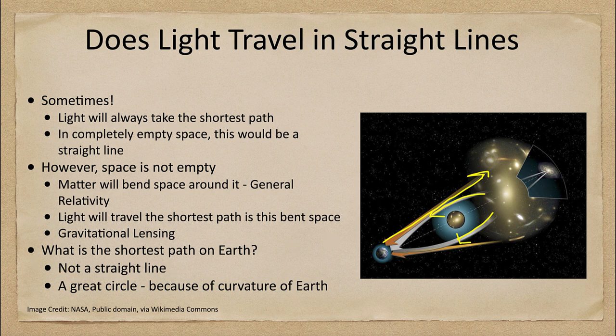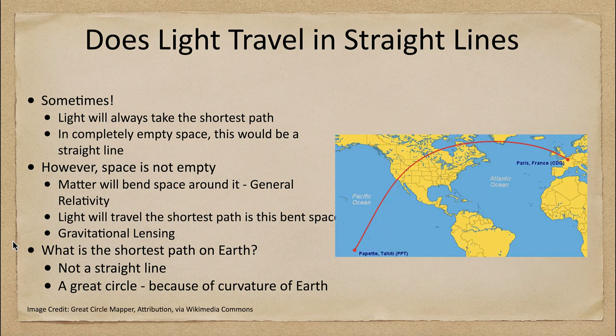This is very similar to what we get on Earth. Earth is a spherical planet — close to spherical, at least. So what is the shortest path on Earth? Well, it's not a straight line; it is a great circle, because of Earth's curvature.